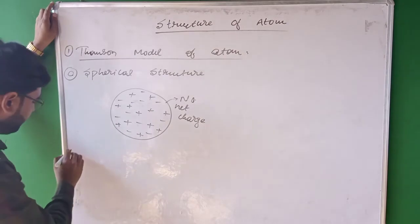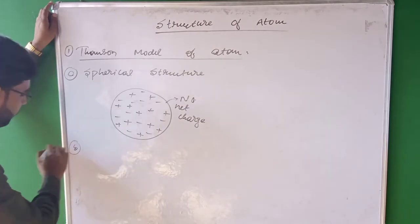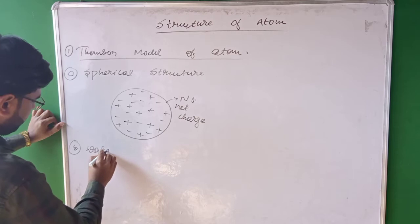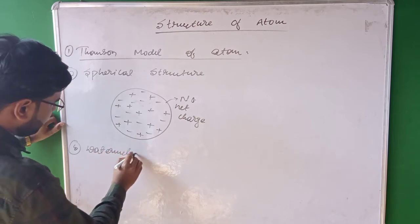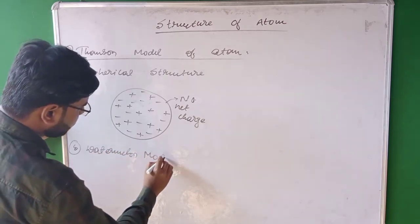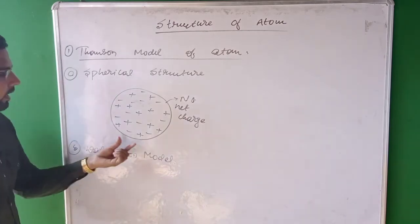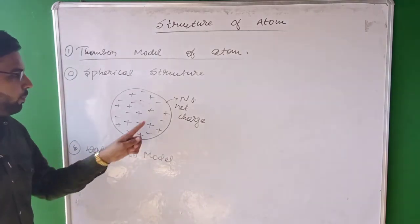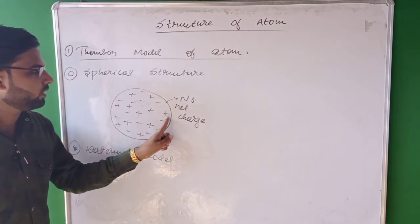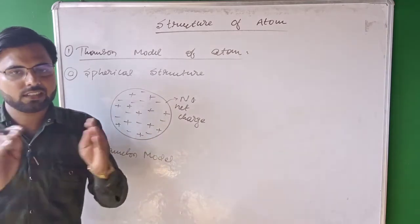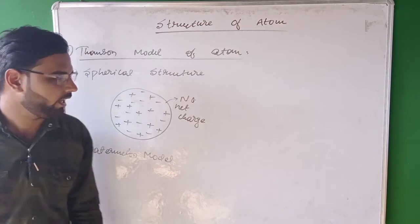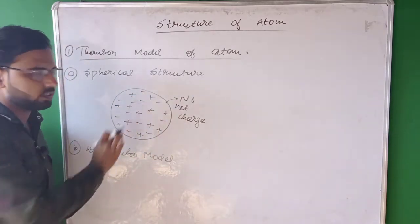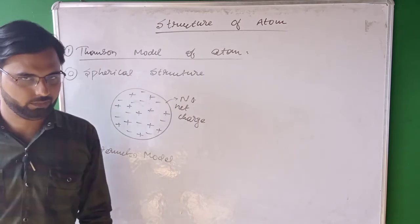Thomson also said that this model is called the watermelon model. The atom is like a watermelon in which the positive charges are like the red parts of the watermelon, and the negative charges, which are electrons, are like the seeds in the watermelon.